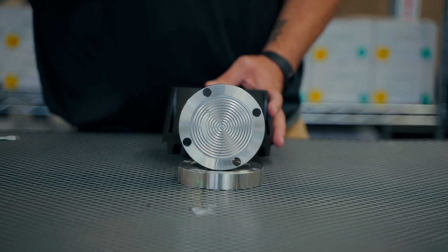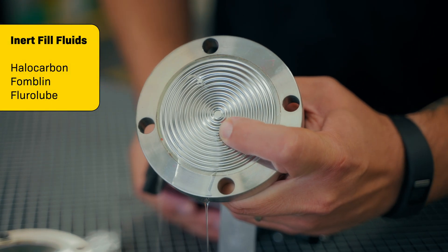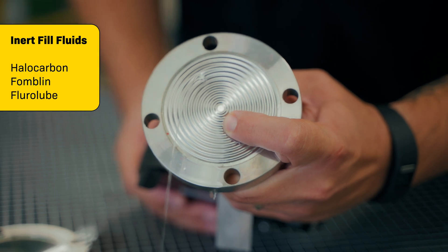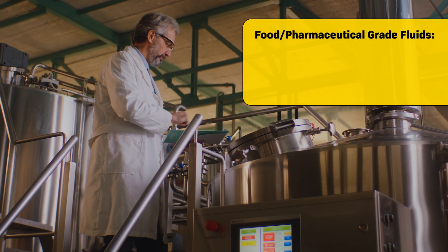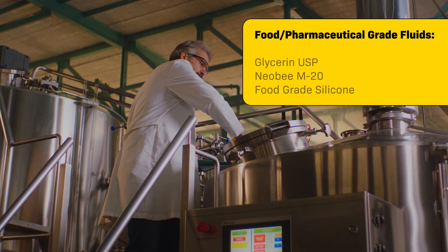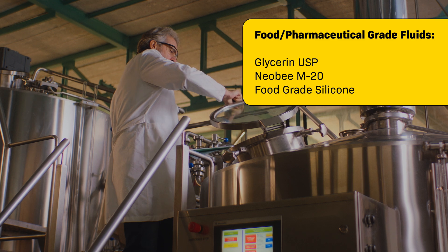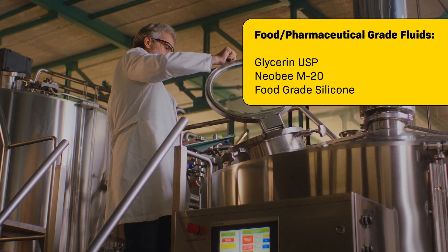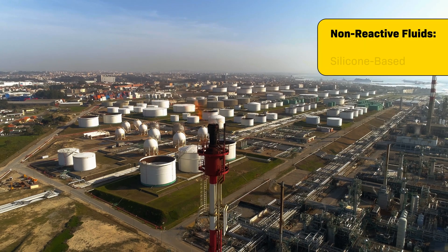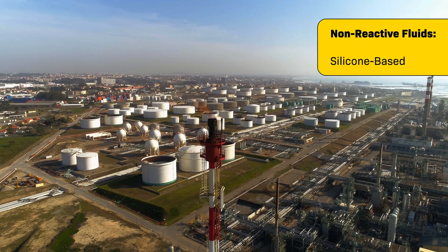Choose an inert fill fluid like halocarbon, flambolin, or floral loop. In sanitary applications, choose a food or pharmaceutical grade fill fluid like glycerin USP, Niobe M20, or food grade silicone. For non-reactive applications, silicone-based fluids are most commonly selected.